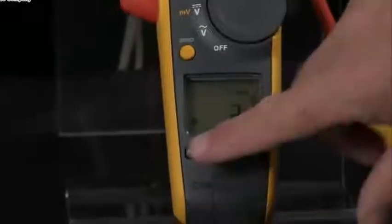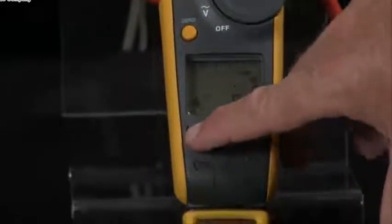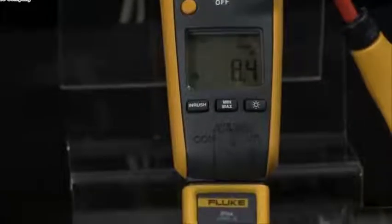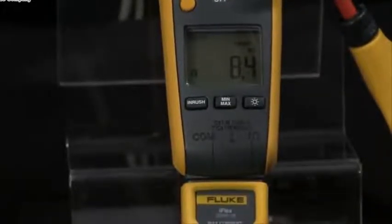To see what the starting or the inrush current is, I press inrush. The meter waits for the motor to start and then it captures my inrush so we can see that we have 8 amps.